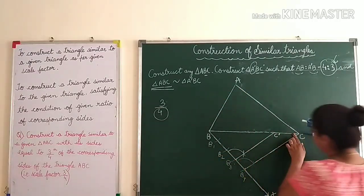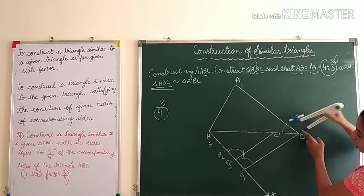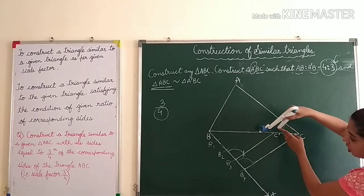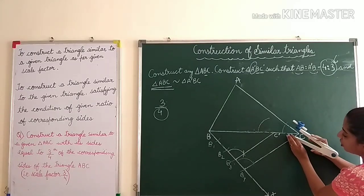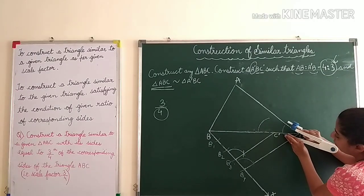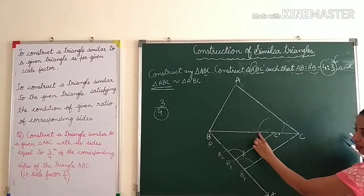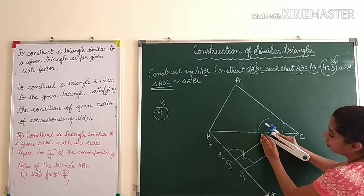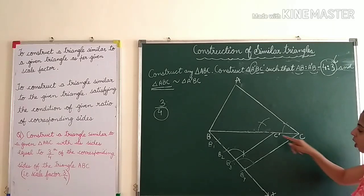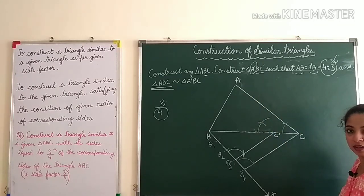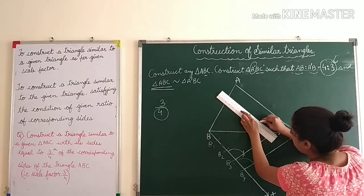To draw this parallel line, keep the pointer at C and draw an arc of a certain radius. With the same radius centered at C', draw the same arc. Measure this angle, then keeping that measurement as center, cut the arc from C'. Join C' to this point of intersection and draw the parallel line.